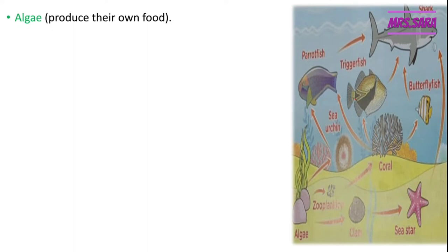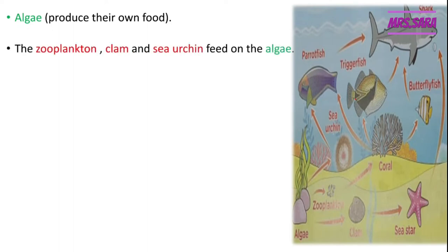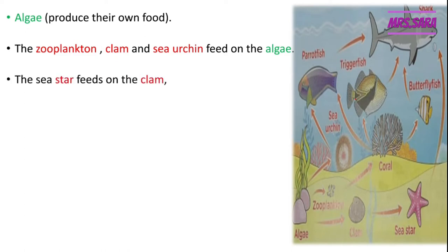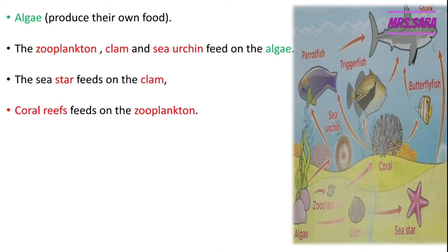Algae produce their own food. The zooplankton, the clam, and the sea urchin feed on the algae — you can see the arrows from the algae to each of them. So zooplankton, clam, and sea urchin are considered first consumers. The sea star feeds on the clam, so the sea star is a secondary consumer. The coral reef feeds on the zooplankton, so coral reef is also considered a secondary consumer.